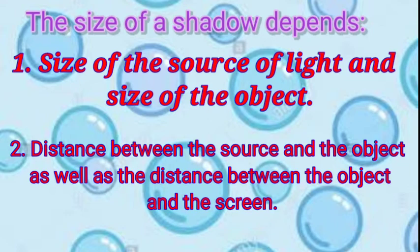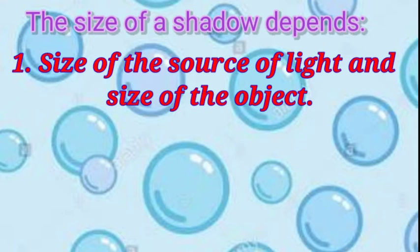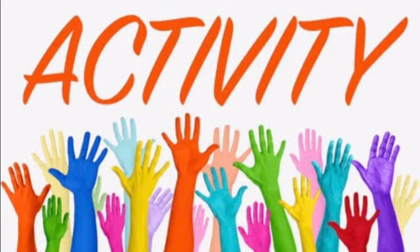Now let us understand how the size of a shadow depends on the size of the source of light and the size of the object. For this, let us carry out an activity to understand it. First, let's see the shadow formed by a point source of light.